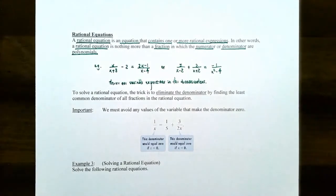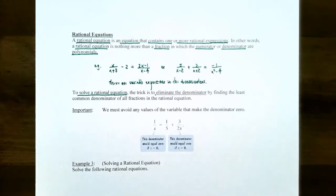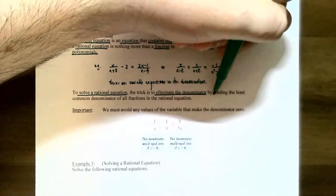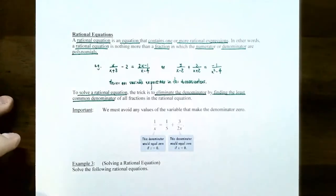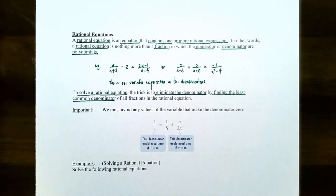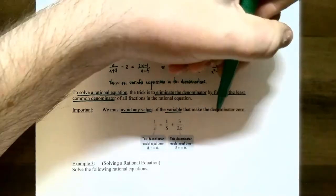So let's talk about how to solve rational equations. To solve a rational equation, we're going to use the trick from the previous video — eliminating the denominators by finding the least common denominator, or LCD, which can be used to clear all the fractions in the equation. One thing we need to be very careful about is that rational expressions have a domain that is not all real numbers, so we have to be careful about what values of x we get as a solution. We need to avoid any values of the variable that will make the denominator 0.